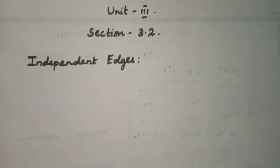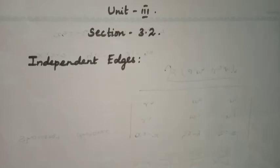Hello students. In this video we are going to learn independent edges. What does mean by independent edges? Two edges are said to be independent edges if they are non-adjacent.